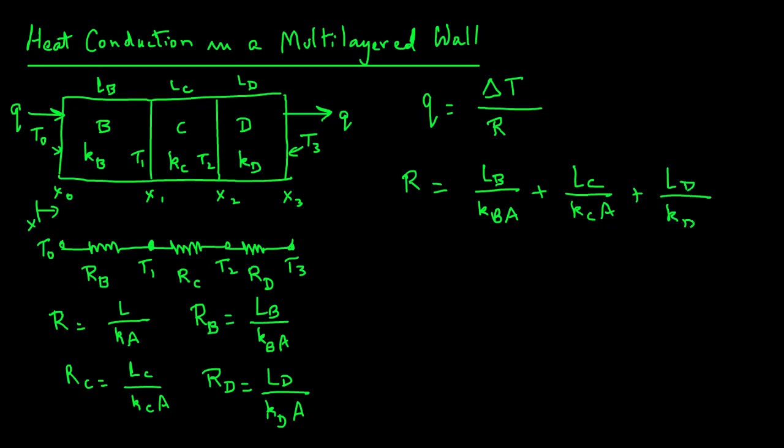And we can go ahead and substitute that in our equation here. The equation then for rate of heat transfer is the temperature difference for the entire circuit. Note that temperature difference is T0 minus T3, and that's in the numerator. In the denominator, we have the sum of all the resistance values: LB over KB A plus LC over KC A plus LD over KD A. So this is our equation to find out the rate of heat transfer in a multilayer system.